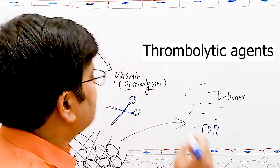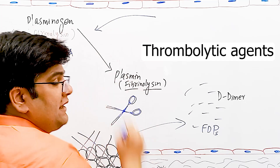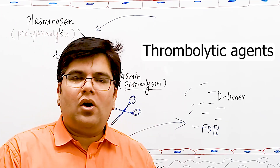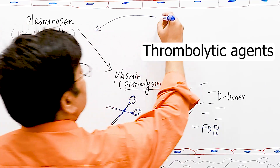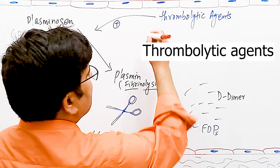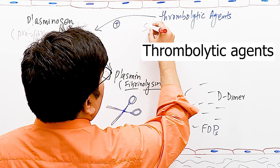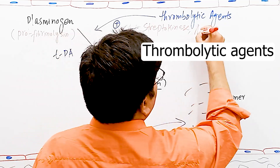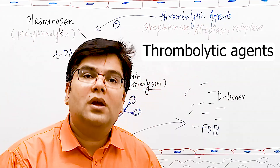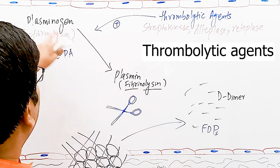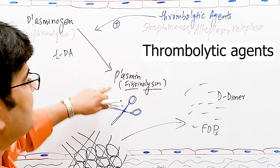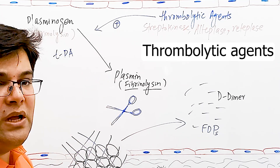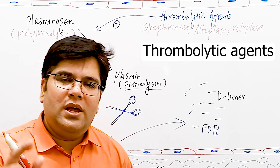Just like tissue plasminogen activator, there are drugs and chemicals which can cause the conversion of plasminogen into plasmin. These are called thrombolytic agents. Some examples of thrombolytic agents are streptokinase, which is produced from the bacteria Streptococcus, alteplase, and reteplase. All these agents stimulate the conversion of plasminogen into its active form plasmin, and hence increase the breakdown of fibrin meshwork, causing thrombolysis or fibrinolysis.